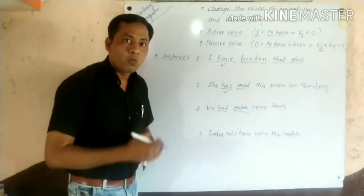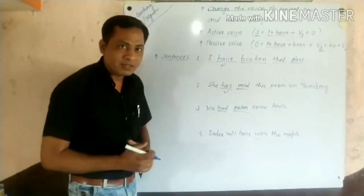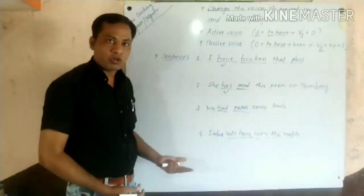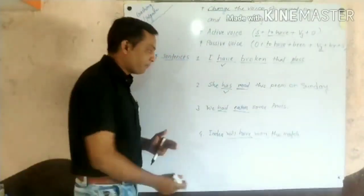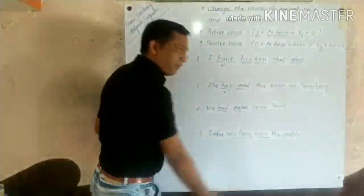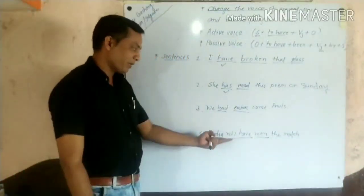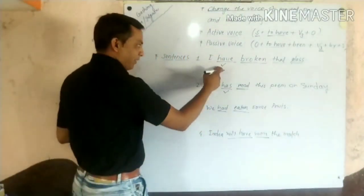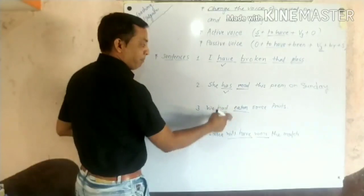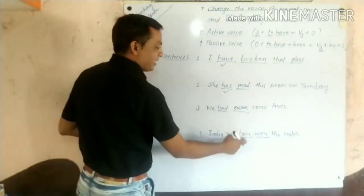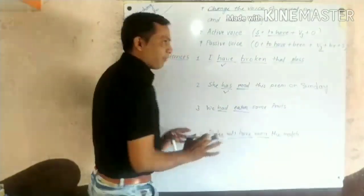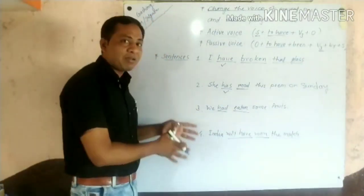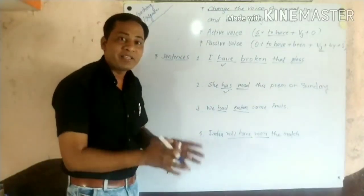In future tense, what do we use? We use 'will have' or 'shall have,' and after that the third form of the main verb. So this is the formula for future perfect tense. We have covered present perfect tense, past perfect tense, and future perfect tense — all three formulas.